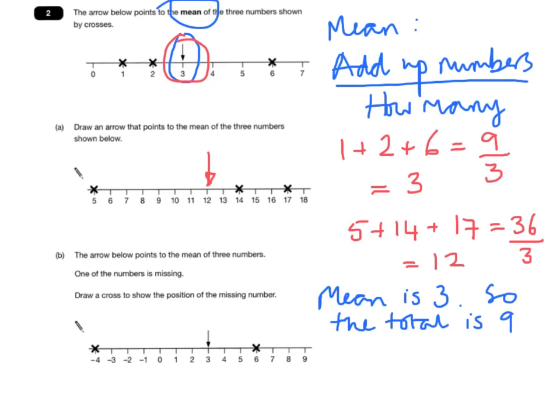So if the total is nine, we can take minus four plus six, which makes two, and then we know we need another seven to get to nine. So the third number must be seven.